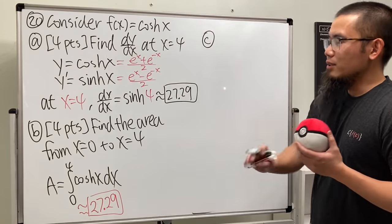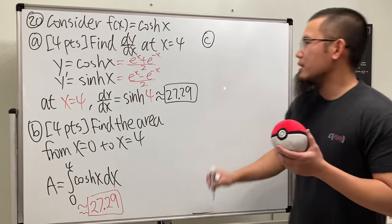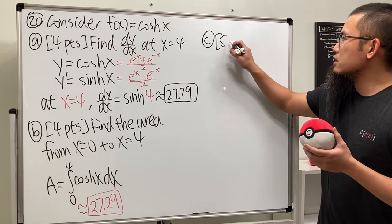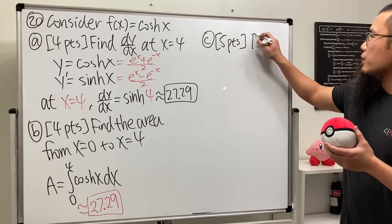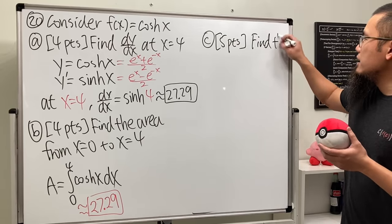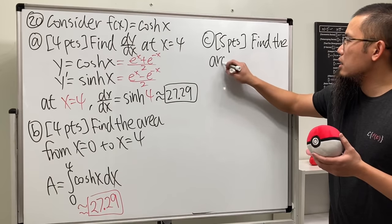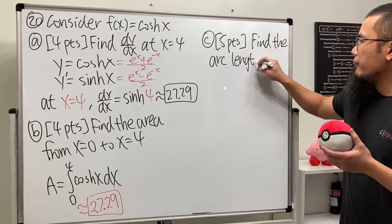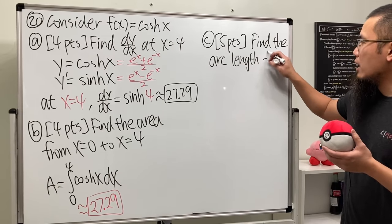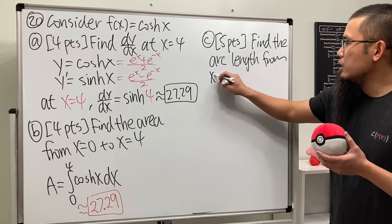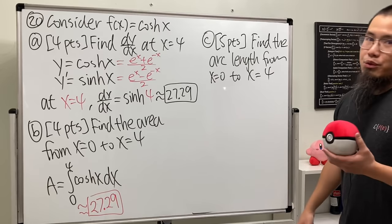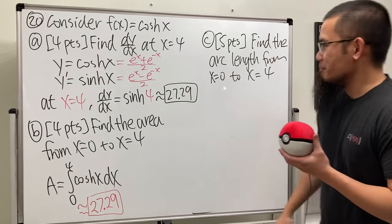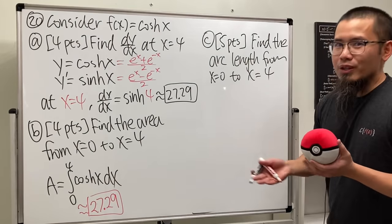Part C, I promise only these three parts. Part C, 5 points. For this one, we are going to find the arc length, and we are going to go from x is equal to 0 to x is equal to 4.